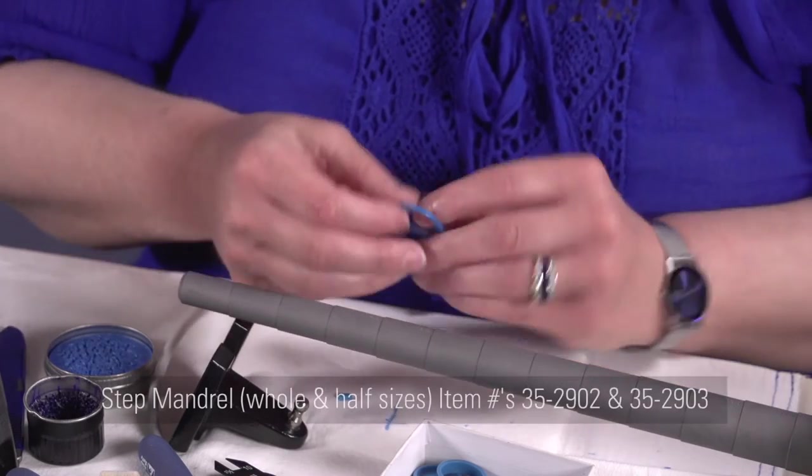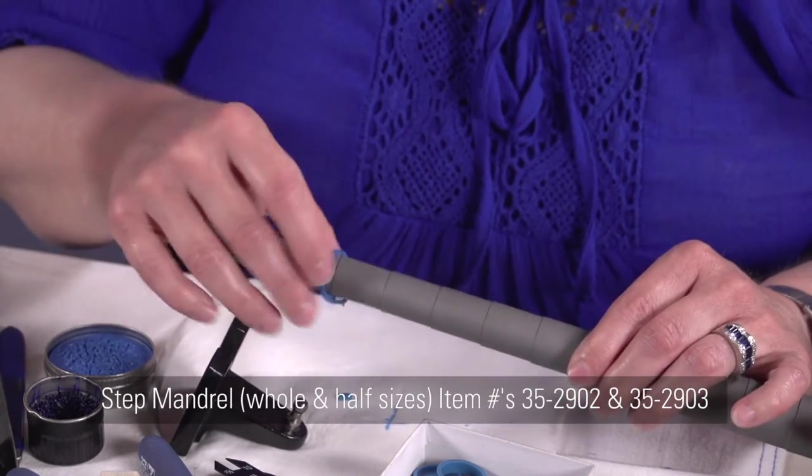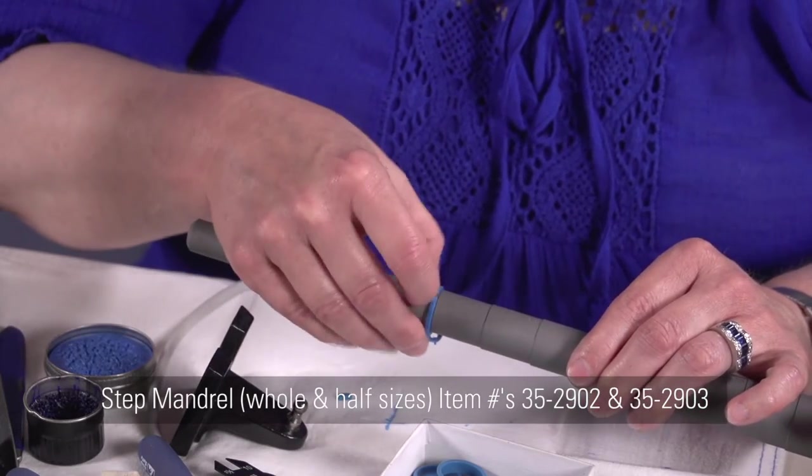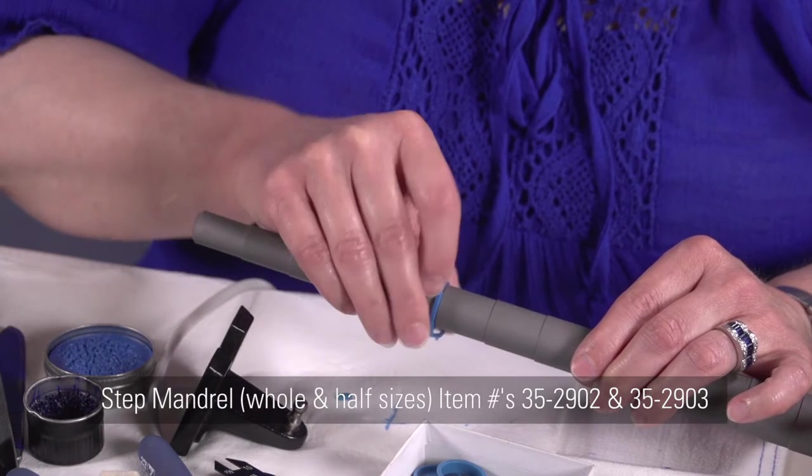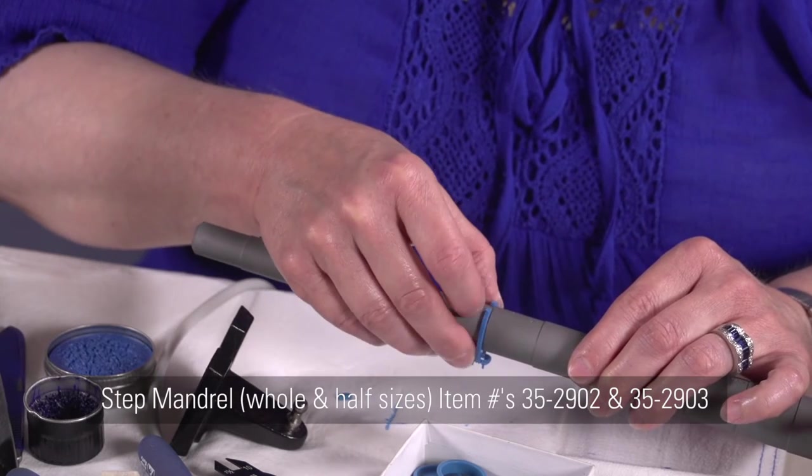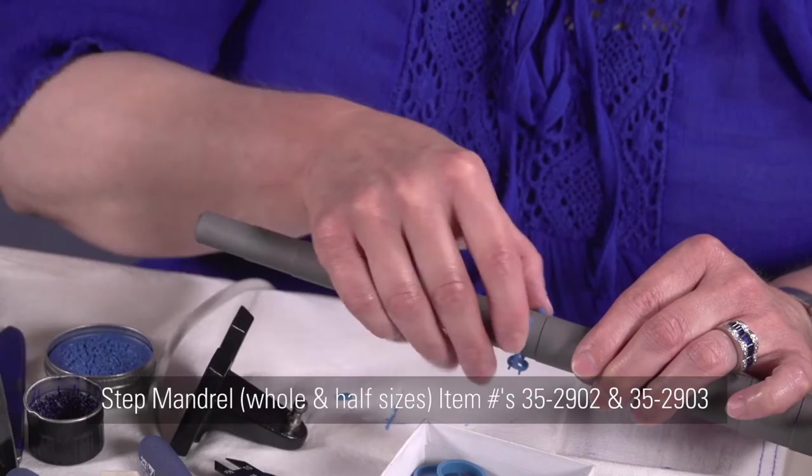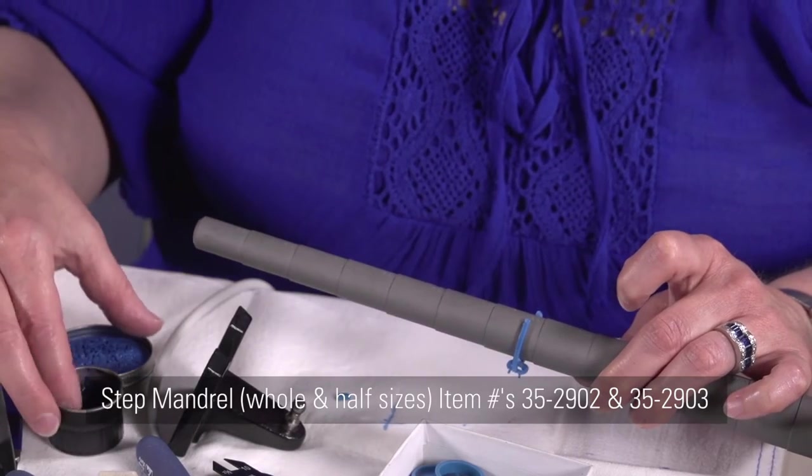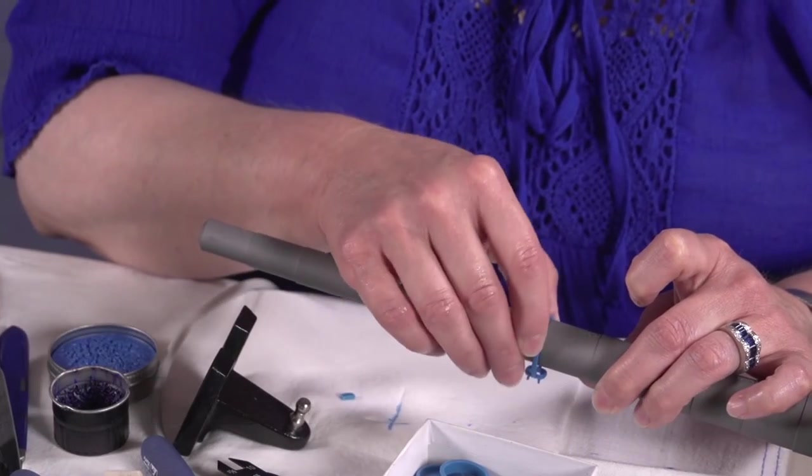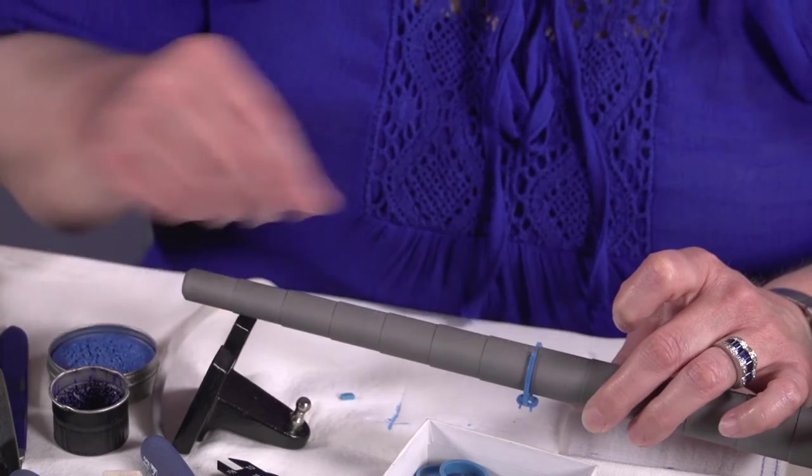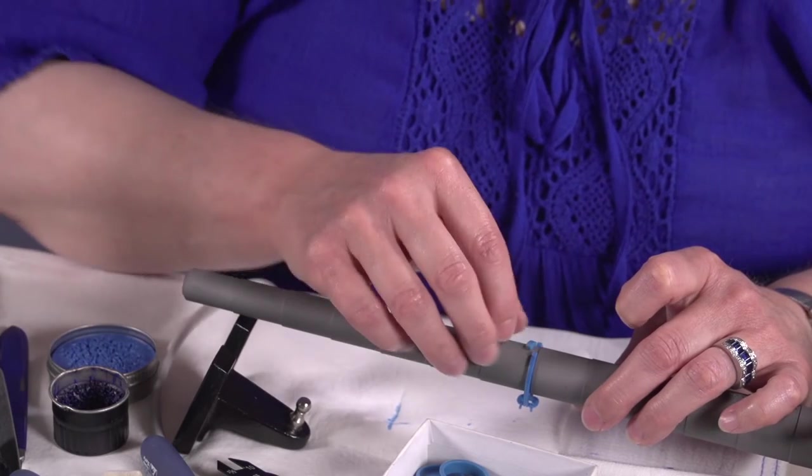Now I'm going to put this on my ring mandrel. I'm going to a 9.5, and it is a lot to add. When we're sizing down, we basically just use one of these two waxes, but because we're going so big, we really want to add the wax to it.